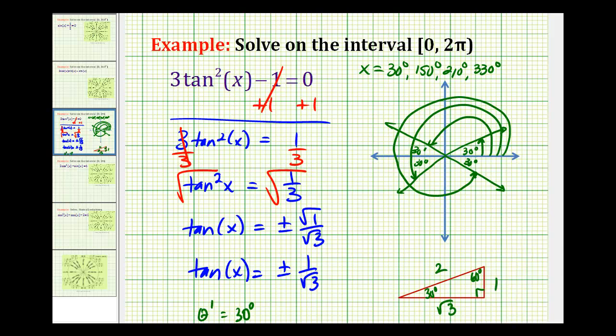So now to express these in radians, our solutions will be x equals 30 degrees is the same as π over 6, 150 degrees will be π minus π over 6, or 5π over 6.